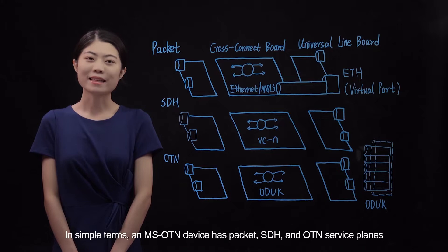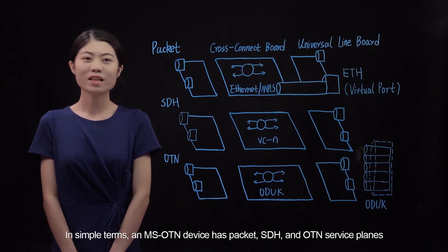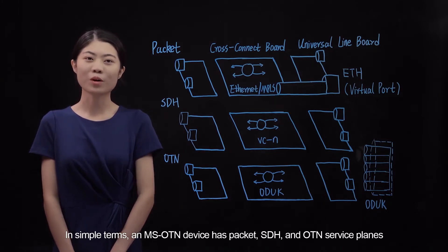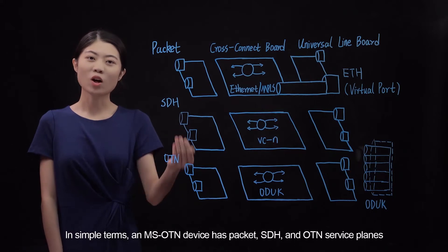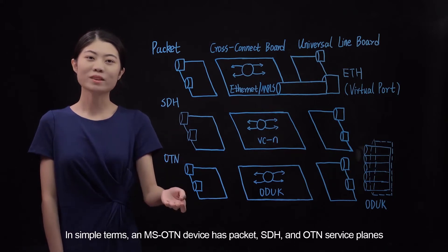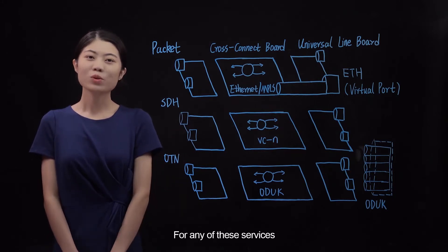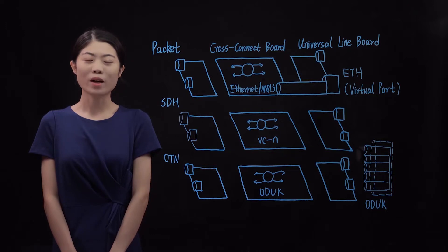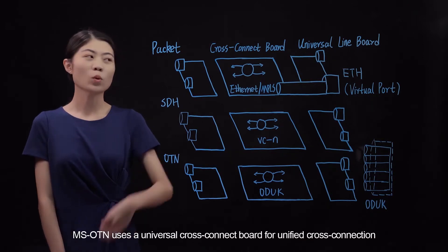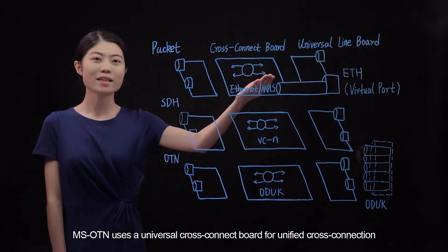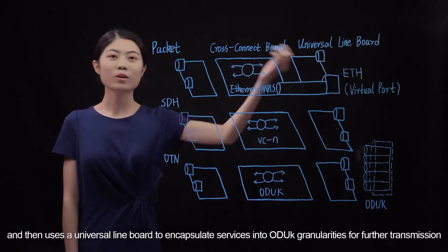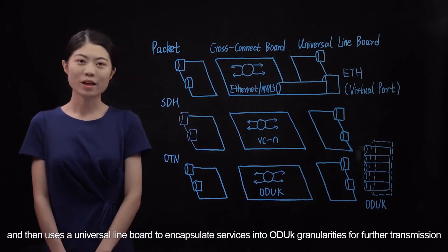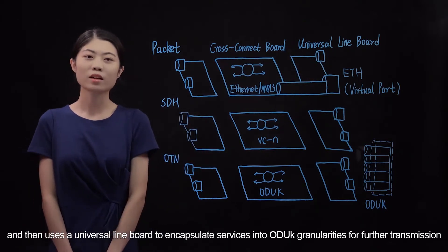In simple terms, an MSOTN device has packet, SDH, and OTN service planes. For any of these services, MSOTN uses a universal cross-connect board for unified cross-connection, and then uses a universal line board to encapsulate services into ODUK granularities for further transmission.